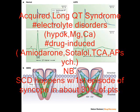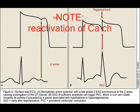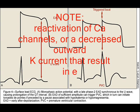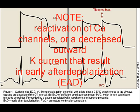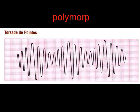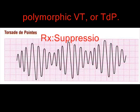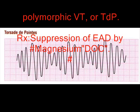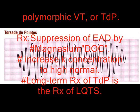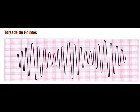About 30 percent of patients present with a first episode of syncope. Reactivation of calcium channels or decreased outward potassium current results in early afterdepolarizations, which in turn lead to polymorphic VT or torsades de pointes. Suppression of early afterdepolarizations by magnesium or increasing the potassium concentration to high-normal levels is the treatment approach.